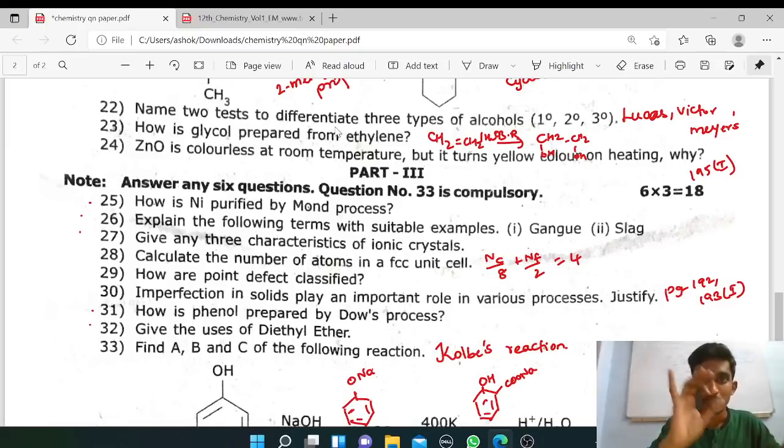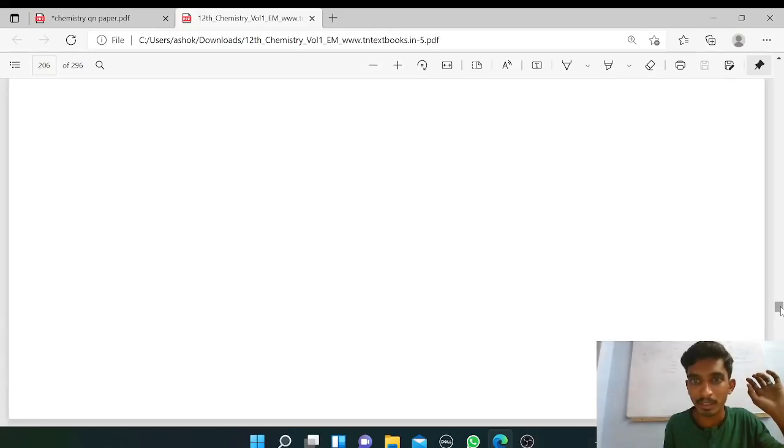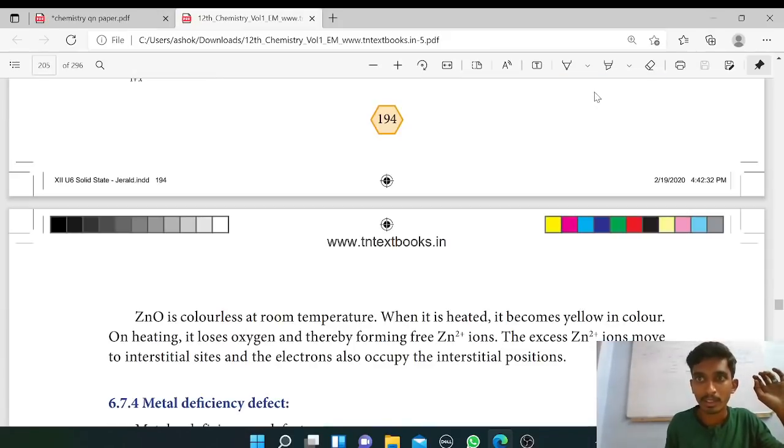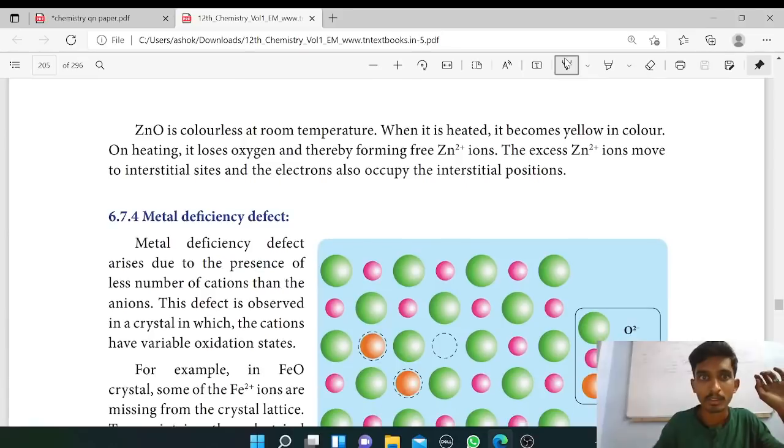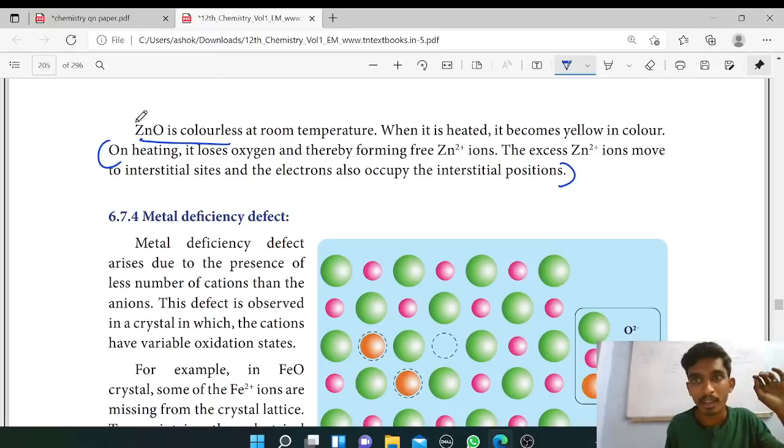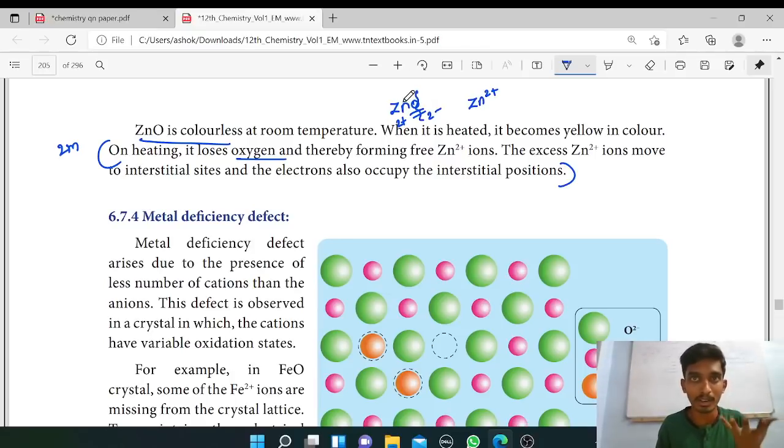Next, reasoning question: zinc oxide is colorless at room temperature but it turns yellow when heating. So this is metal excess defect. But it turns yellow while heating, so this is zinc oxide is colorless at room temperature, when it is heated becomes yellow in color.